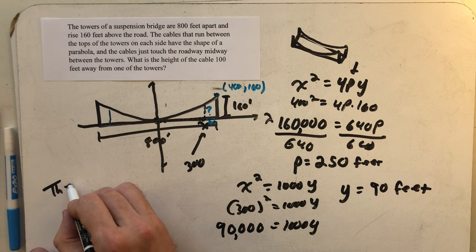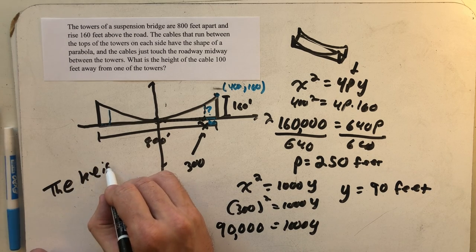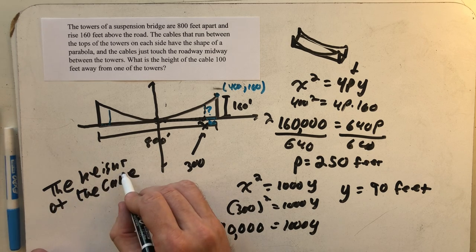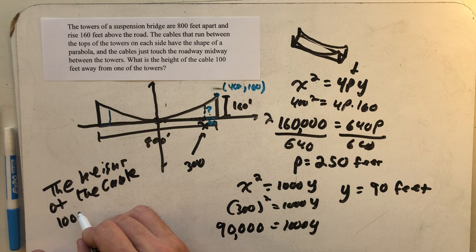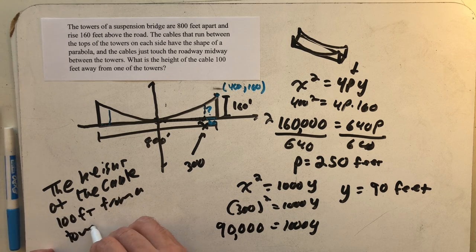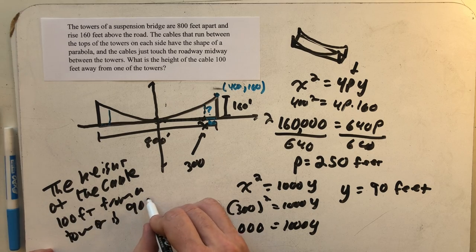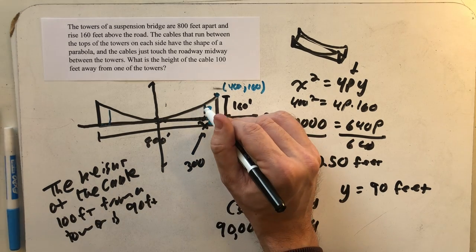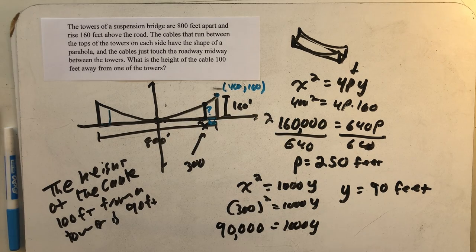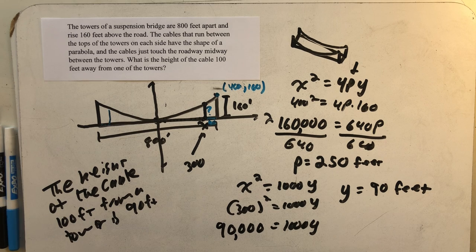The height of the cable 100 feet from a tower is 90 feet. Well, that could be an important calculation. Maybe I need to run a cable between the big cable here and the road bed to provide some tension, some support for that roadway. That's it for now.